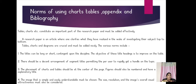Norms of using charts, tables, appendix, and bibliography: A research paper is an article where one clarifies what they have realized after investigating their subject in depth. Tables, charts, and diagrams are crucial and must be added neatly. The title can be long or short depending on the discipline. The objective of the heading is to improve on the table. There should be a decent arrangement of segment titles to help the reader quickly grasp the topic. Each table should be named and given a number.